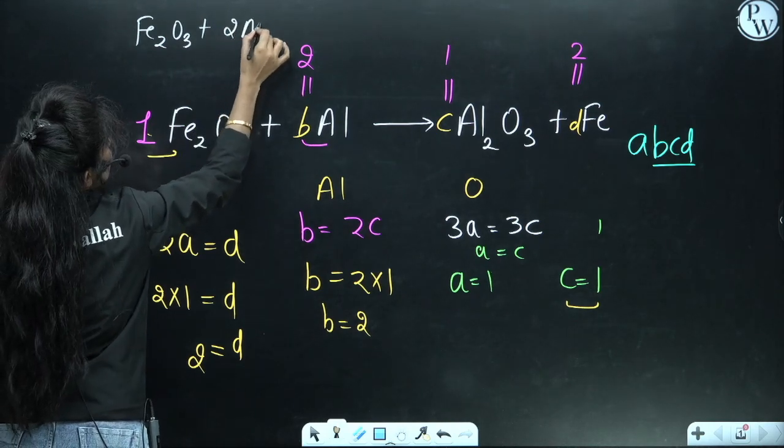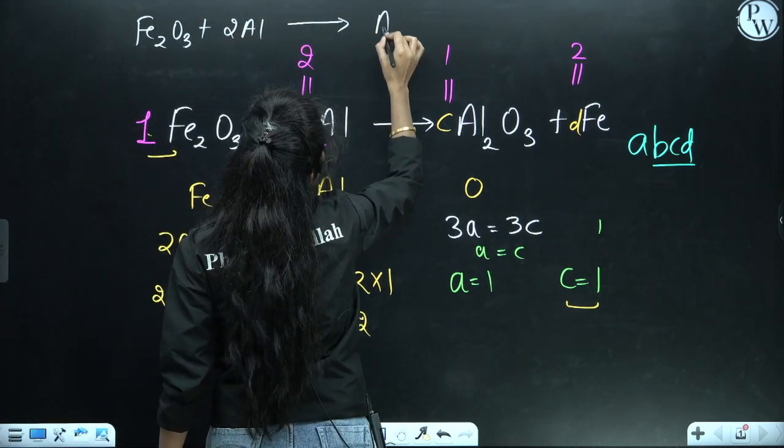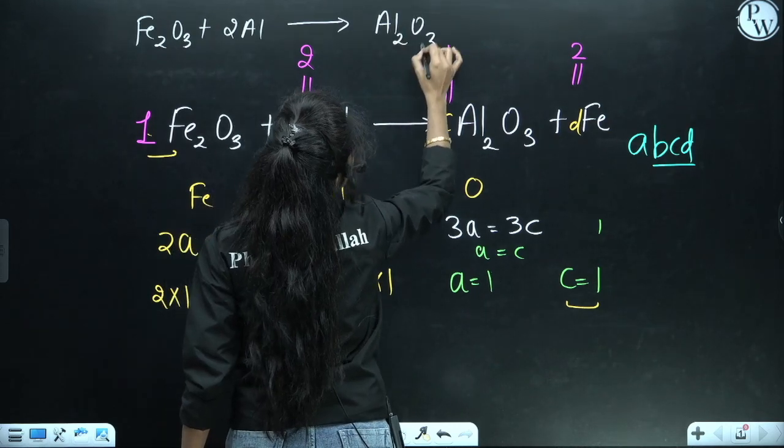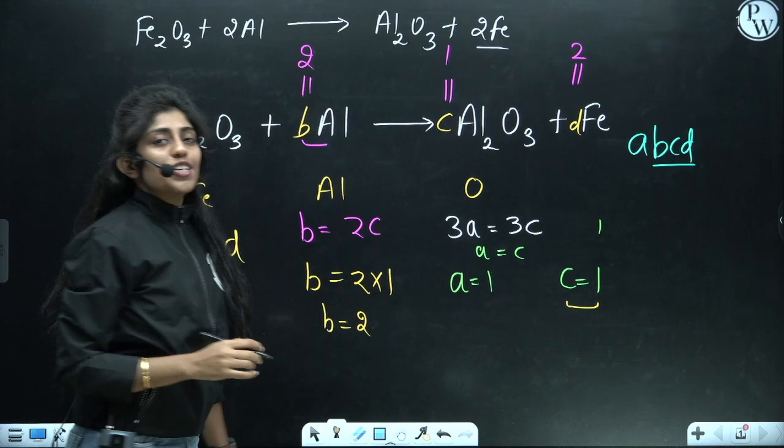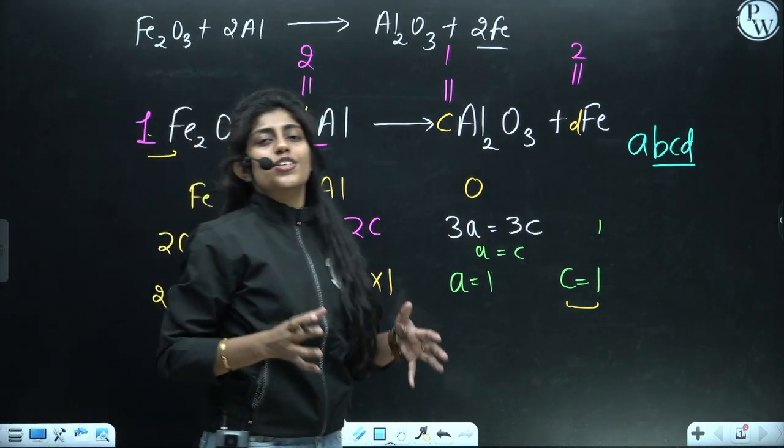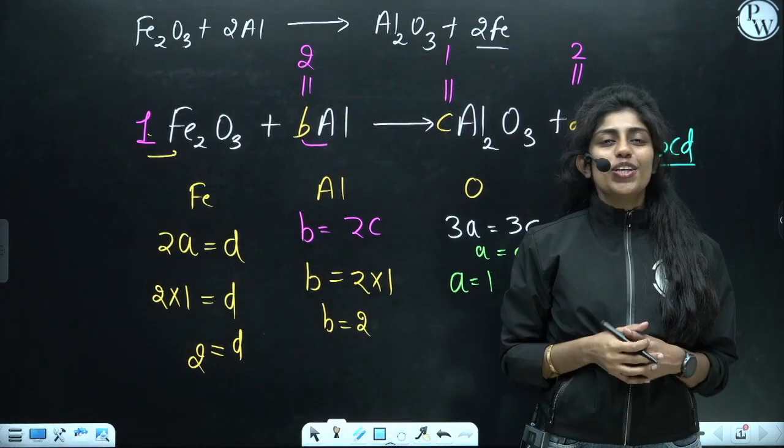...2Al gives you Al₂O₃ plus 2Fe. Do let me know if it's going to help you out. Thank you, stay connected.